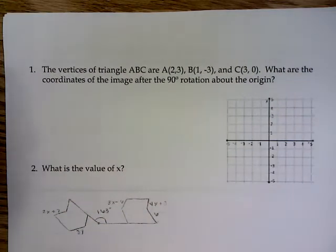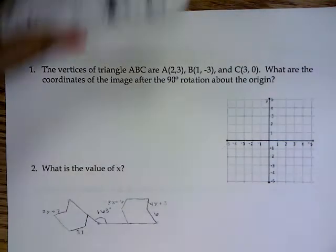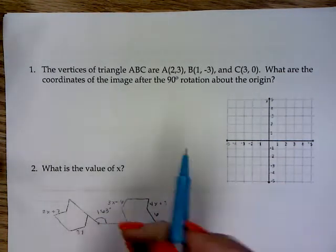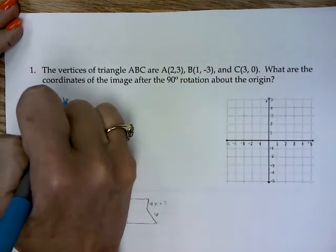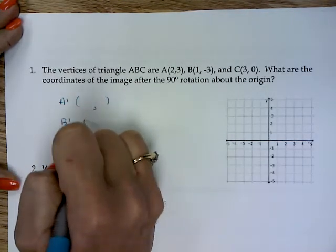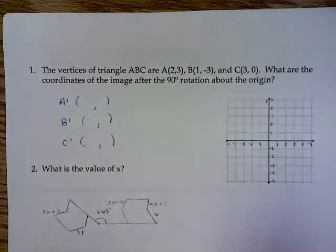On number 1, it says the vertices of triangle ABC are A, B, and C. What are the coordinates of the image after the 90 degree rotation? As I've mentioned several times, first you're trying to find the image of the coordinates. So you're trying to find the A prime, the B prime, and the C prime. Now as I've mentioned, some of you could remember the rule. I again don't remember the rule.